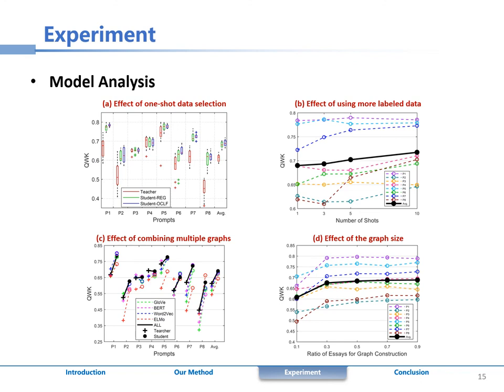As shown in figure A, by comparing the blue boxes and the green boxes, we can find that the student OCLF is more robust to the selection of one-shot data than student REC.